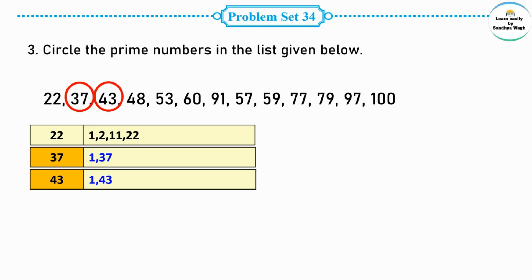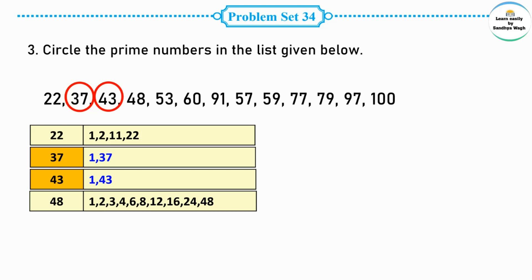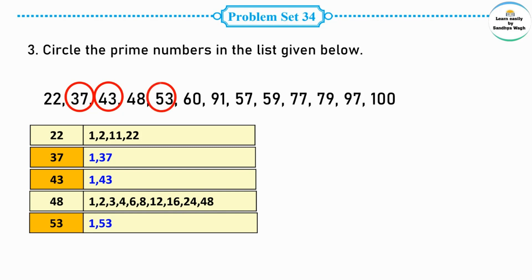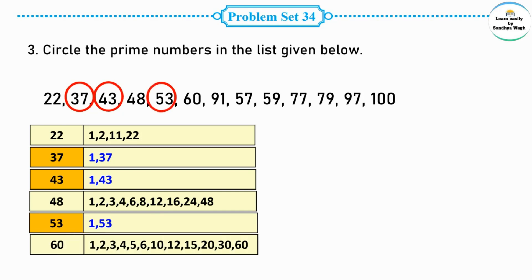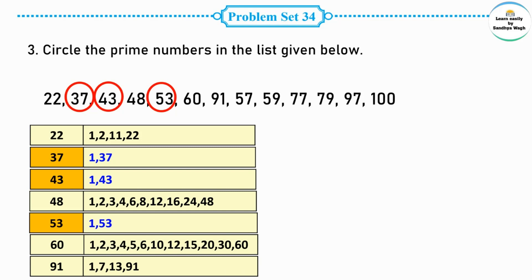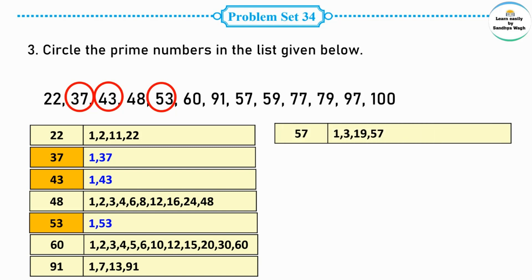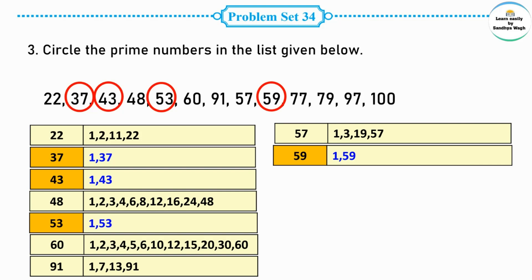Number 48 is a composite number because it has many factors. Number 53 is a prime number — it has only two factors: first factor 1 and second factor the number itself, 53. Number 60 is a composite number with many factors. Number 91 is also a composite number with four factors. Number 57 is also composite. Number 59 has only two factors — 1 and 59 — so 59 is a prime number.